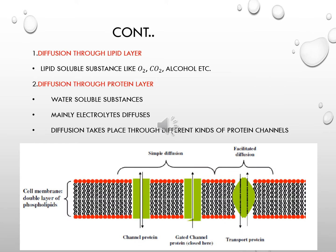The first is simple diffusion through the lipid layer. The lipid layer of the cell membrane is permeable only to lipid-soluble substances like oxygen, carbon dioxide, alcohol, etc. Next is simple diffusion through the protein layer. The protein layer is permeable to water-soluble substances, mostly electrolytes.